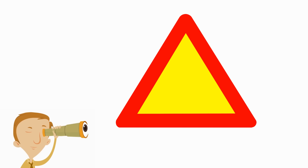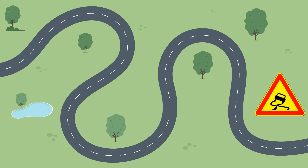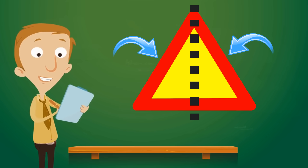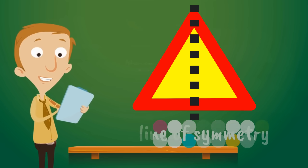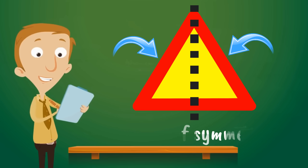Look at this triangle. It's a yellow triangle with a red border. Sometimes warning signs on the road look like this. To show you how symmetry works, I'm going to place this line down the middle of this triangle. It's still one triangle, but now it has two sides.